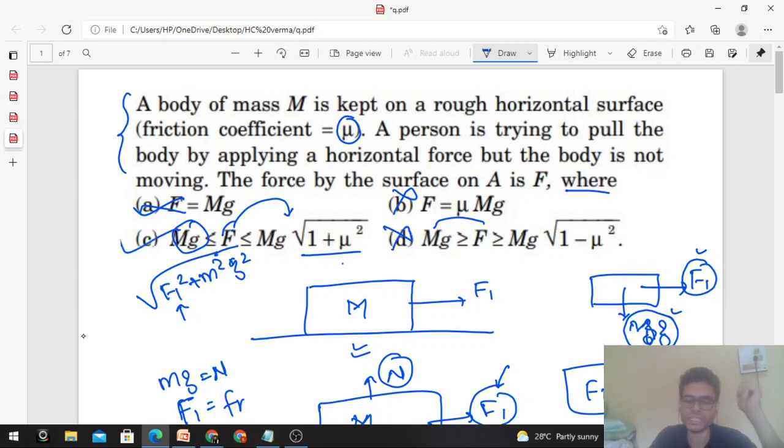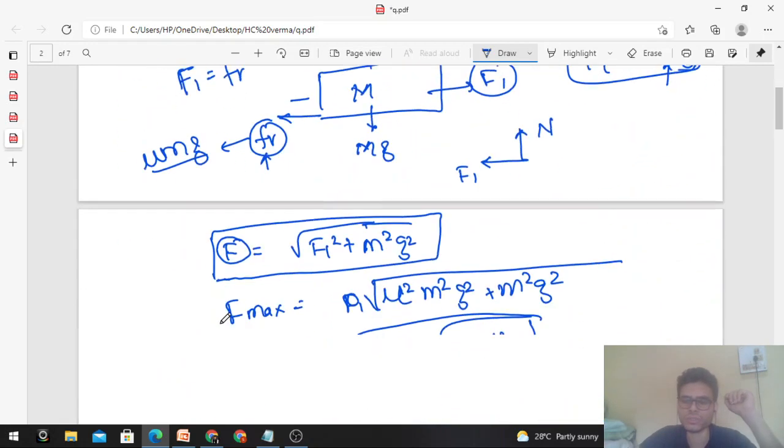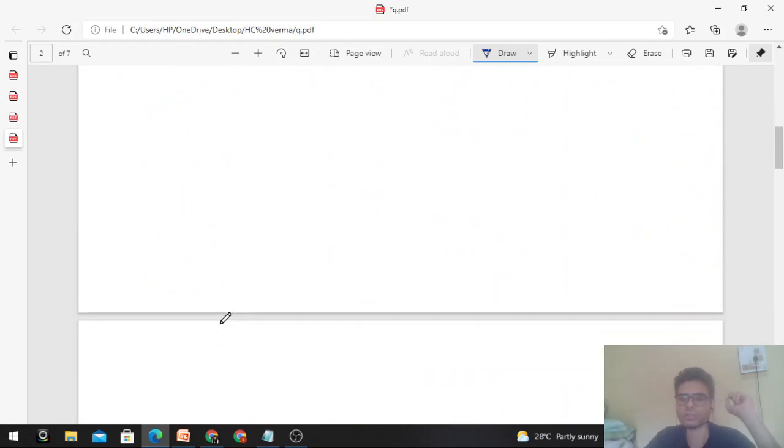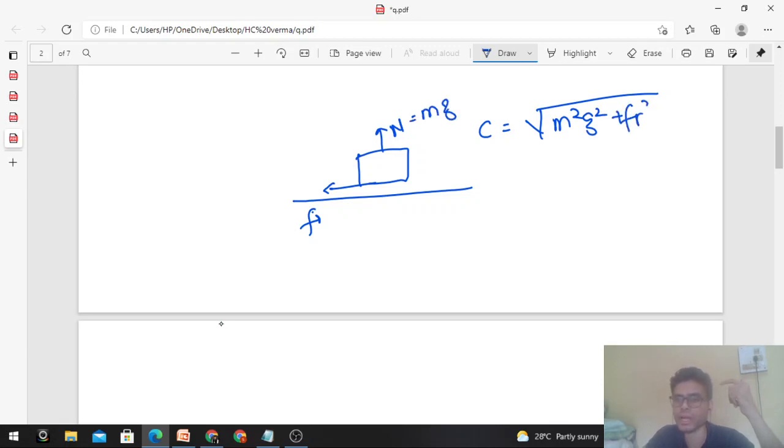In fact, if you see this in a more generalized way, whatever force the surface applies on any body, we call it contact force. Like friction force backward and upward normal force. If I talk about the contact force's range, first let me calculate contact force. Contact force will be M²G², which is normal that should equal Mg, plus friction force.